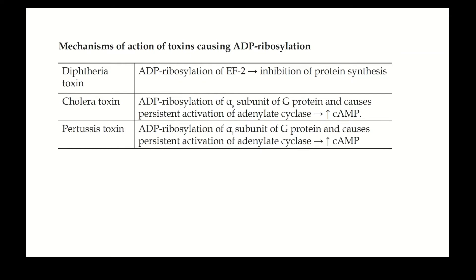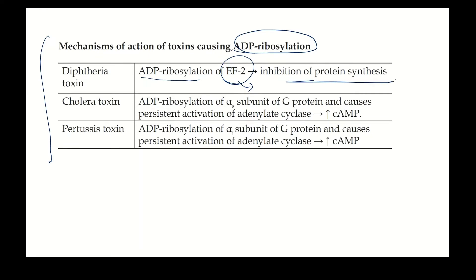ADP ribosylation of histones is associated with DNA repair. Certain toxins also cause ADP ribosylation — this is a post-translational modification of proteins. Diphtheria toxin causes ADP ribosylation of elongation factor 2, which is involved in protein synthesis. ADP ribosylation of elongation factor 2 leads to inhibition of protein synthesis — that is why diphtheria toxin is dangerous.